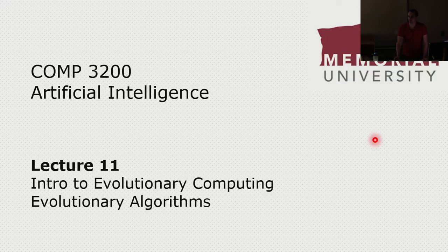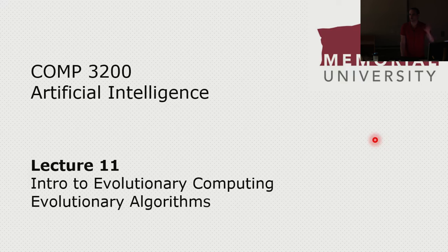Just a quick note: there is some biology in this lecture. I will make this warning again when I get to that part. I am not a biologist, and you will not have to know any of the biology on an exam. But evolutionary computing is very heavily inspired by the natural phenomenon of evolution, so I want to give those analogies to real biology to show the motivation for why these algorithms exist. It's not necessary to retain that information for an exam.